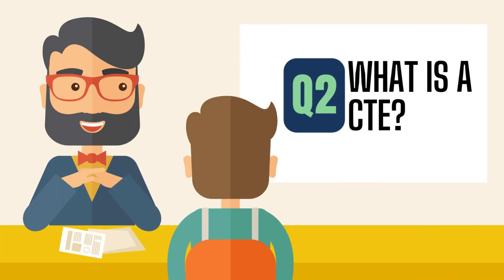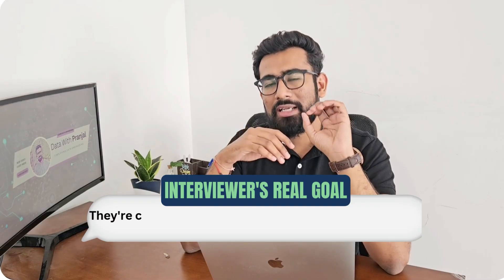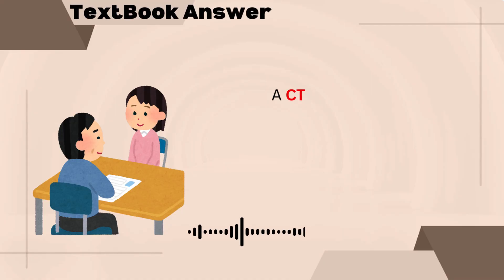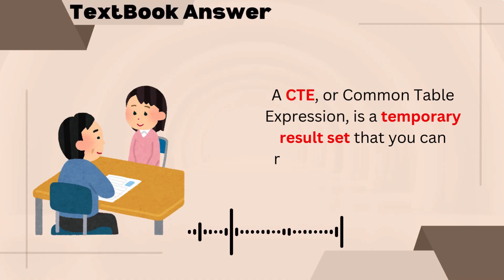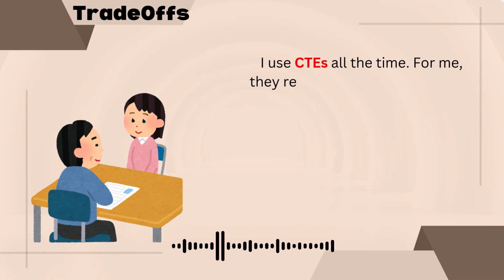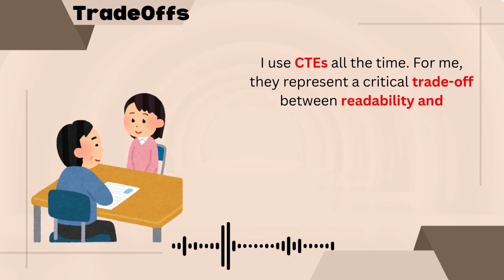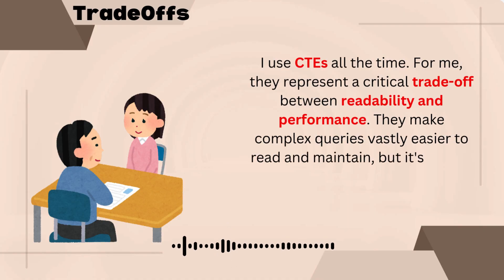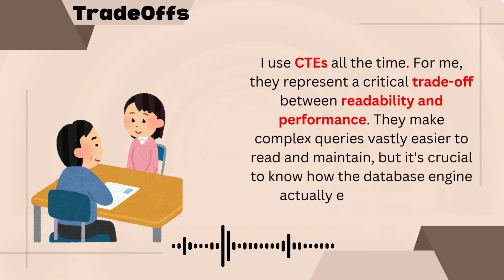Let's move to question number two: What is a CTE? With this question, the interviewer's goal is to understand whether you prioritize clean coding or performance. A normal candidate answers something like: a CTE, or Common Table Expression, is a temporary result set that you can reference in your query. As a data engineer who works with CTEs a lot, you should answer more deeply. I use CTEs all the time. For me, they represent a critical trade-off between readability and performance. They make complex queries easier to read and maintain, but it's crucial to know how the database engine actually executes them.